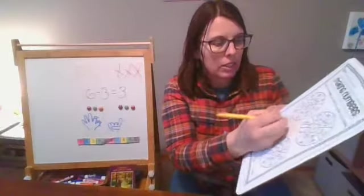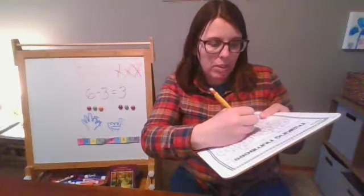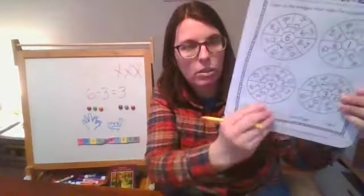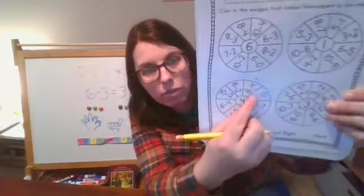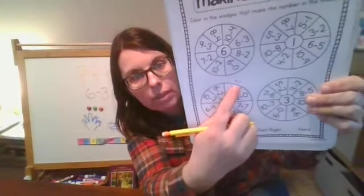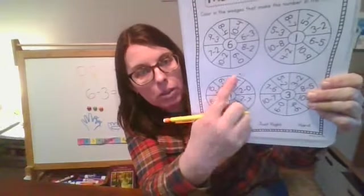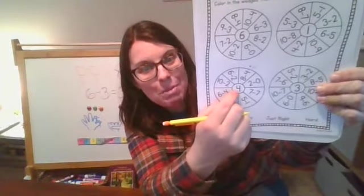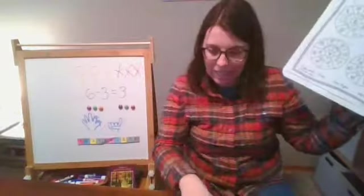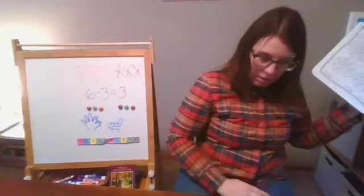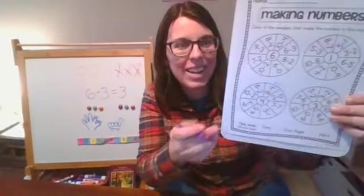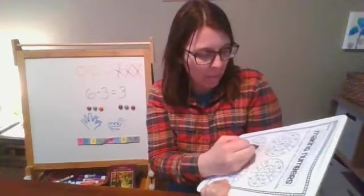And you can put the answer right outside of the wedge if you want to. Like, I like to do that. So my answer was four. So I just wrote that over there real small. Eight minus four equals four. Does that match my number in the middle? It does. So I can color in the wedge. Oh, there's my crayon. It rolled away. So I'm going to color in that wedge.